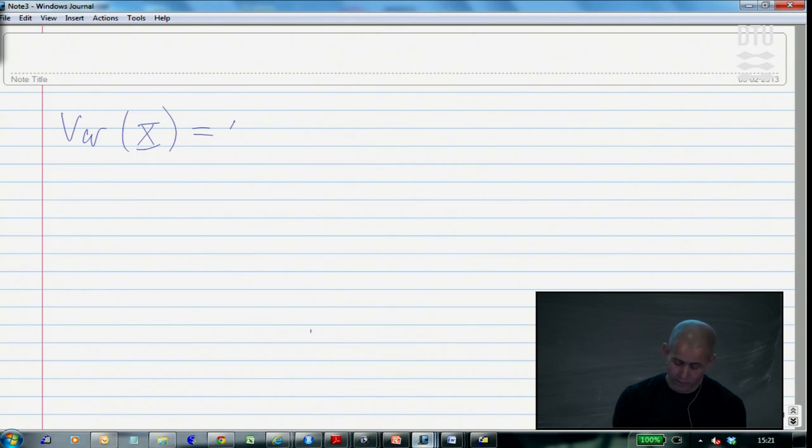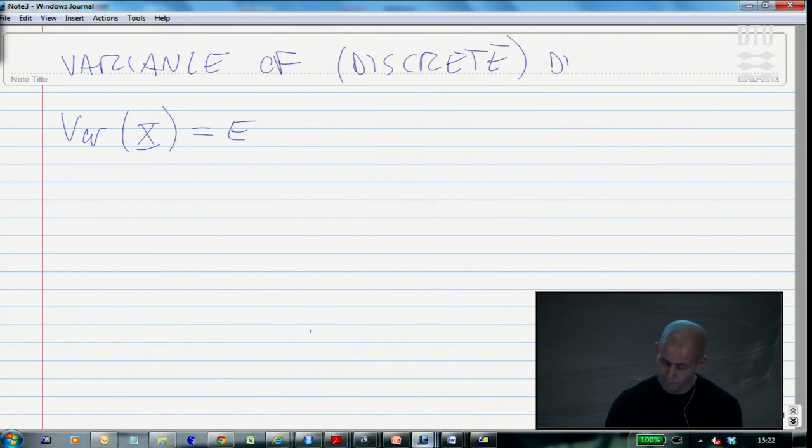The definition of a variance of a discrete distribution - I put discrete in parentheses since the final formula also works for continuous distributions.